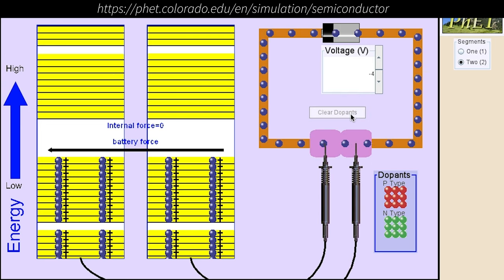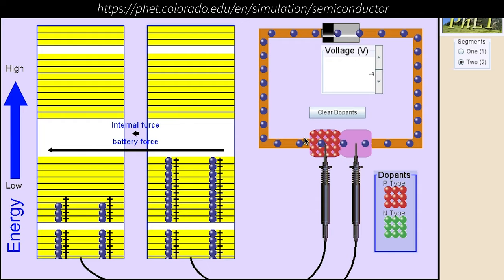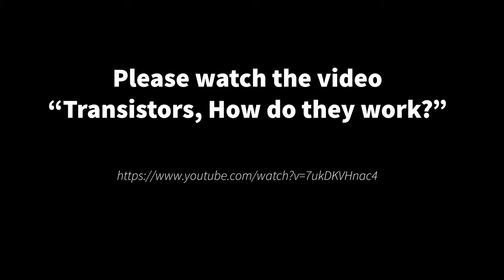Spend some time playing with the simple PN and NP junctions under different bias situations in this PhET semiconductor simulation. And then please watch the video link shown here, which shows the inner workings of an NPN junction transistor and transistor amplifier circuit.